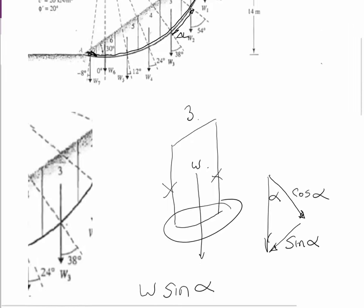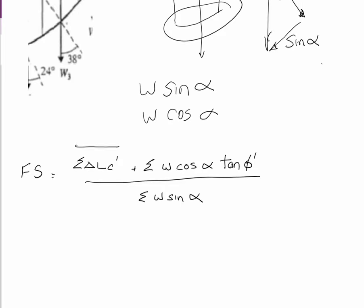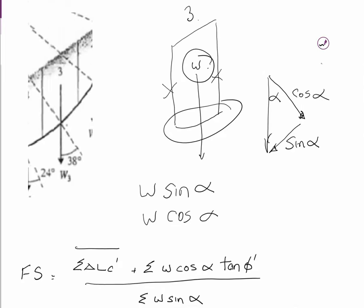Alright, so let's go down to the equation. The sum of delta L, the length of the slip circle, times the effect of cohesion, which should be given, plus the sum of W cos alpha. We spoke about that before.